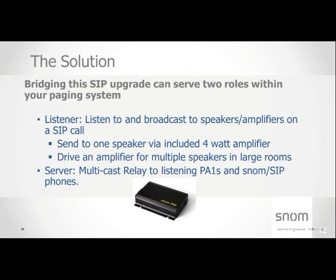The PA1 has two different roles: it serves as both a listener and a server. If you walk into an office that already has an existing SIP-based phone system and you just want to bias the existing speaker, all you need to do is put an auto-answering PA1 into your drop ceiling, hook in a PoE Ethernet cord, and assign an extension just like you would a SIP phone. Once you dial that extension, it will auto-answer and drive either the amplifier or the existing speakers it's been hooked into.